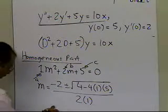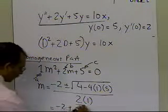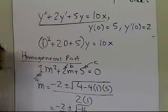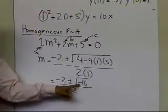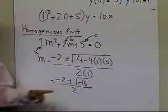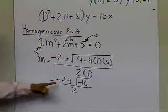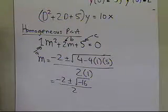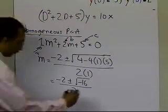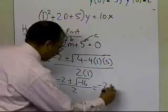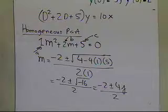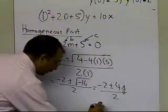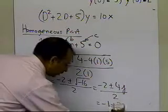From here I get minus 2, plus or minus the square root of minus 16, divided by 2. The number under the square root is a negative number, so we're going to get imaginary numbers. The square root of minus 16 gives us plus or minus 4j, divided by 2, where j stands for the square root of minus 1. Simplifying, we get minus 1 plus or minus 2j.